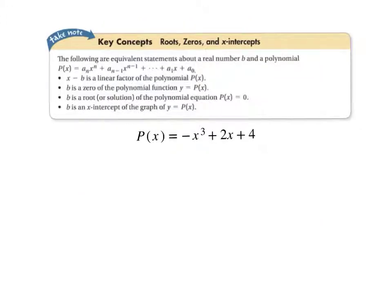Okay, so roots, zeros, and x-intercepts. Recall this expression here. The following are equivalent statements about a real number b and a polynomial function. Remember, this is a polynomial function. If you look, you've got x to the n power, so that's the degree of the function, like we talked about last class. And that degree goes down by one, you've got your ellipsis in between, until you have zero degree of x, so x to the zero power. And a sub n, a sub n minus one, and so on, those are just the coefficients.